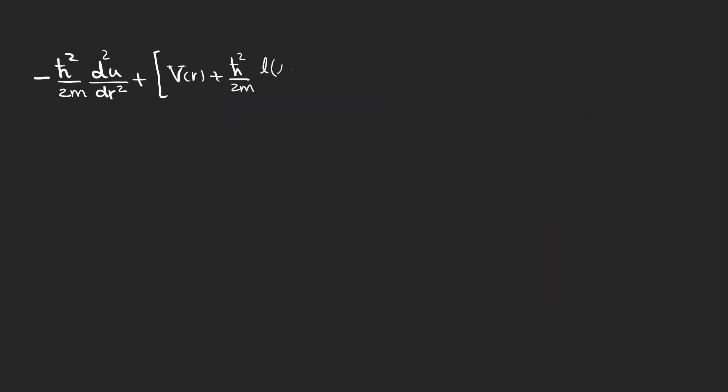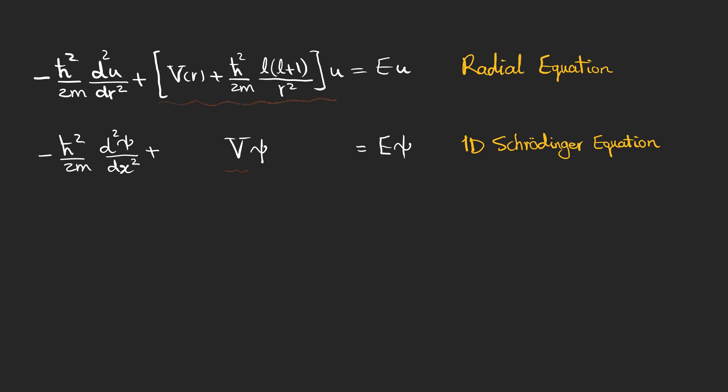This is the last equation that we came up with. It is called the radial equation and it looks like one-dimensional Schrödinger equation. There's a difference in terms of their potentials and the radial equation has an additional term called centrifugal term. This potential in the radial equation is called the effective potential.